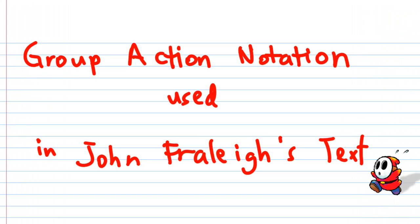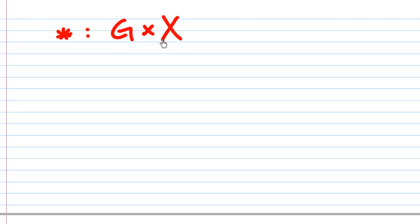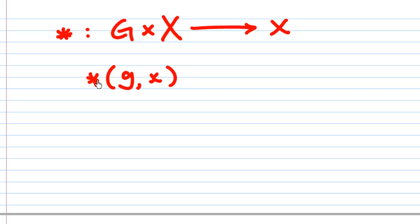For this part, I'm going to discuss some notation used in John Fraleigh's text, Section 16, regarding group action. In the text, we start with a mapping called the star map, which is a mapping from the Cartesian product G cross X to X. So we take an element g in a group and an element x in the set X, apply the star map, and get an element inside X. In John Fraleigh's notation, this is written as g times x, or simply gx.